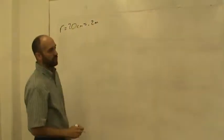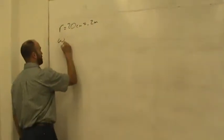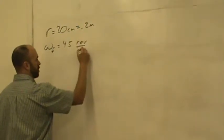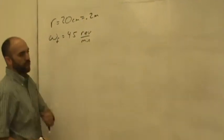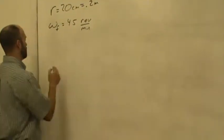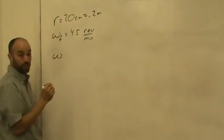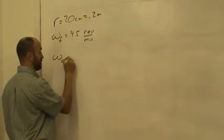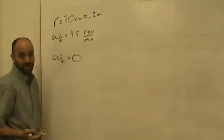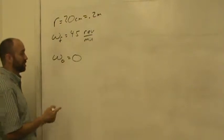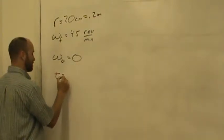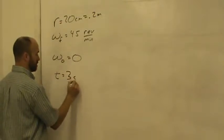We are told the final angular speed, 45 revolutions per minute, that's RPM. We are told the time. It's assumed, since the record player is just sitting there to start with, it's assumed we know the initial speed. That's zero, because it wasn't moving to start with and then you turn it on.